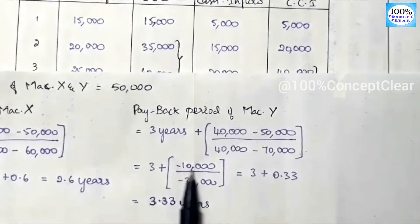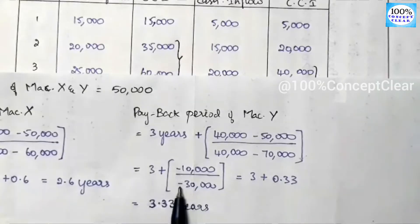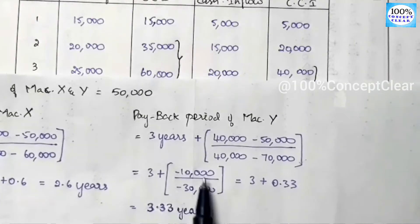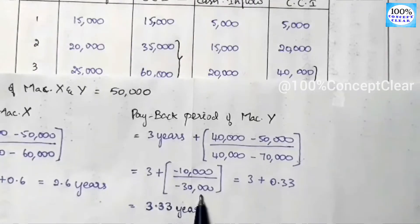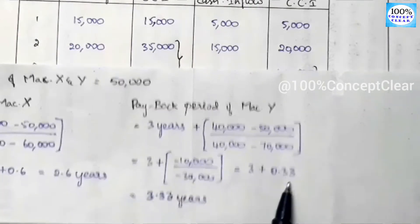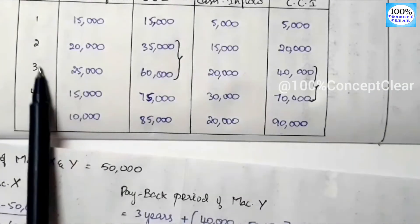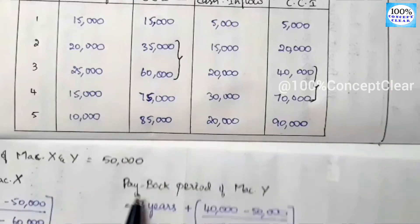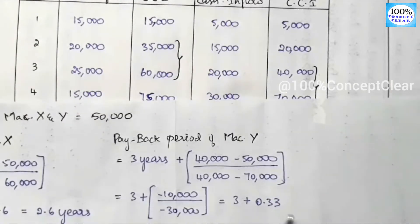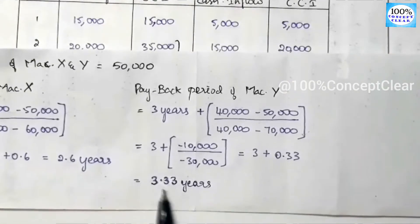10,000 divided by 30,000 is equal to 0.33. So 3 plus 0.33 is equal to 3.33 years. We already identified the 3rd and 4th year as the relevant range, so the payback period of Machine Y is 3.33 years.